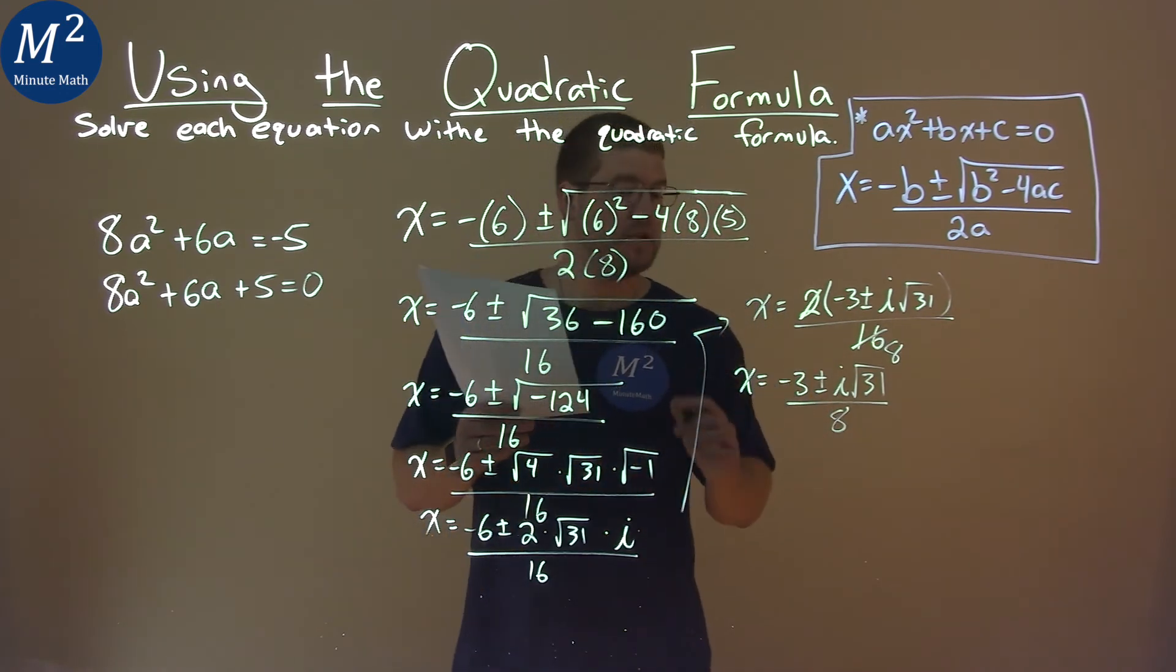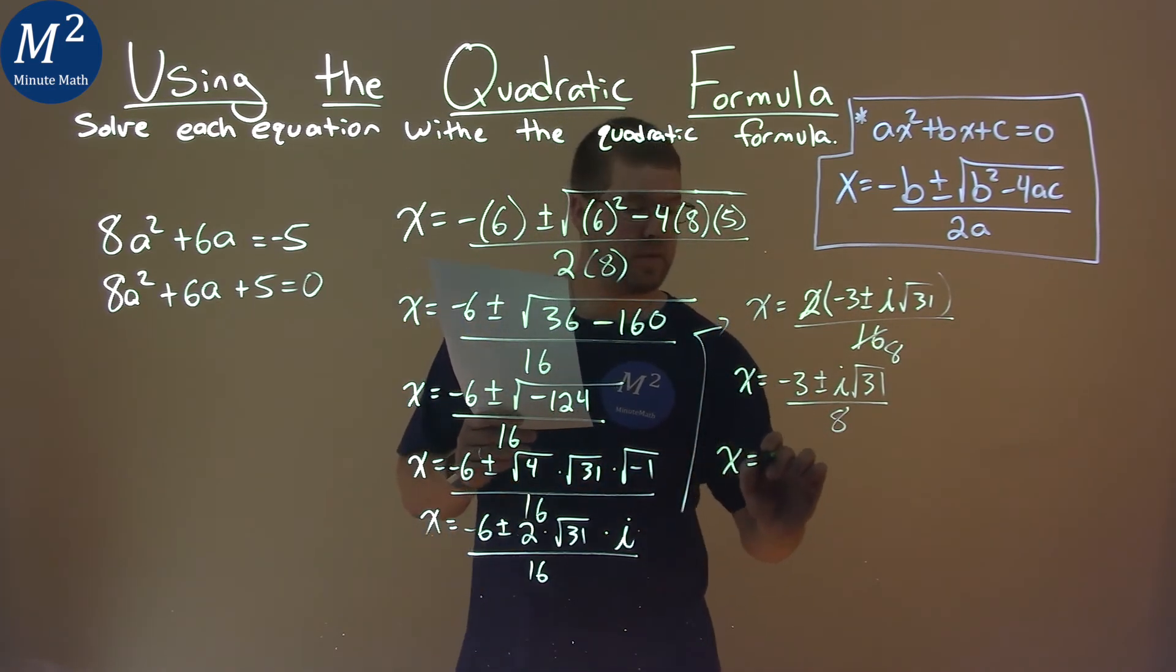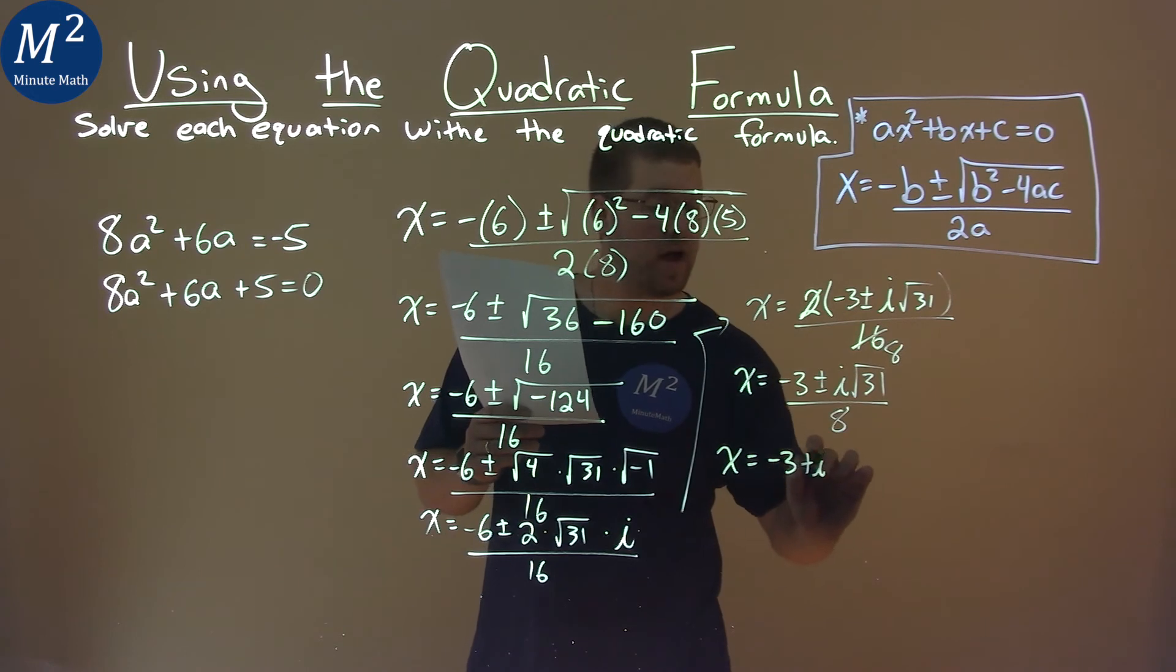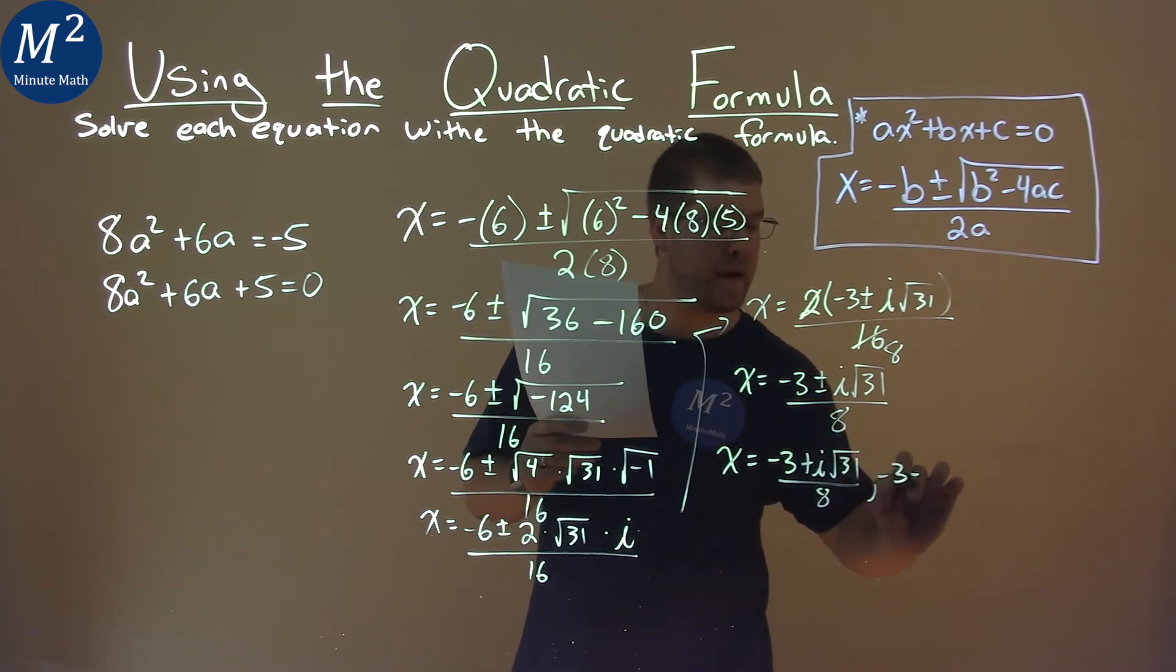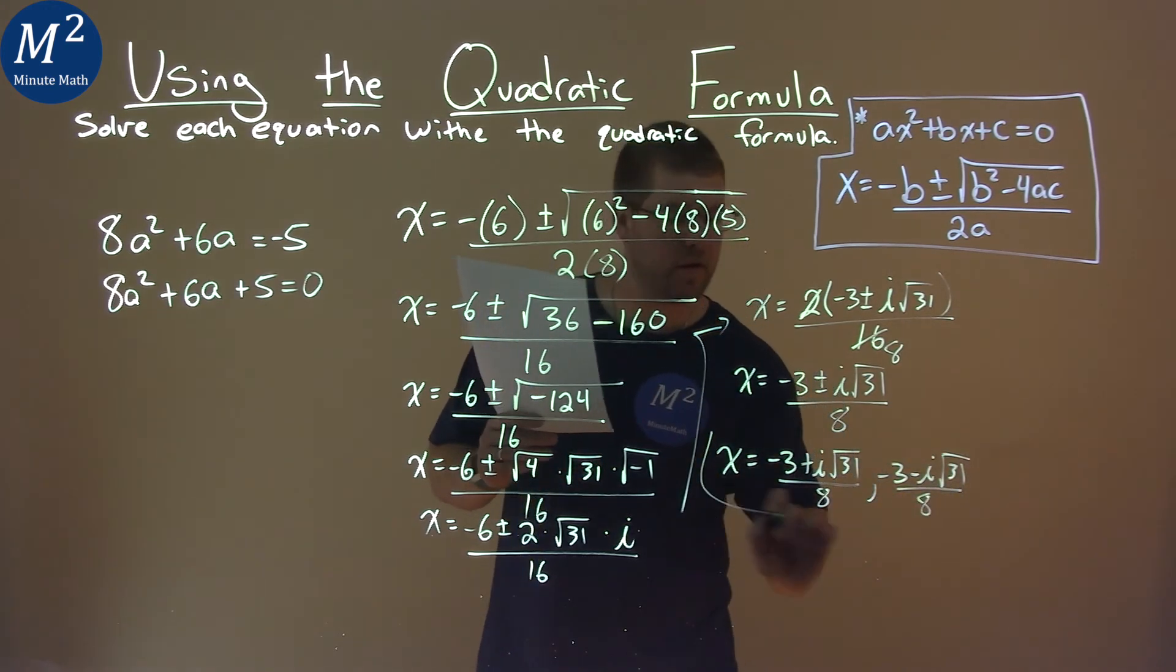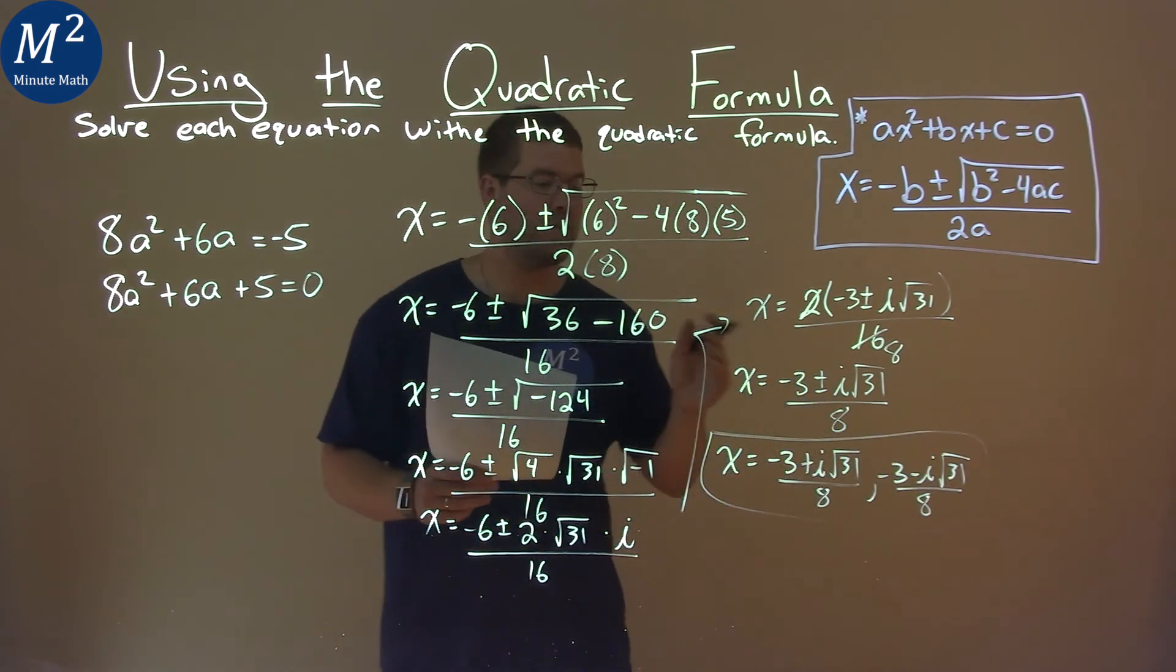We can write this as two individual statements, as x equals negative 3 plus i square root of 31 over 8, and negative 3 minus i square root of 31 over 8. And that is our final answer.